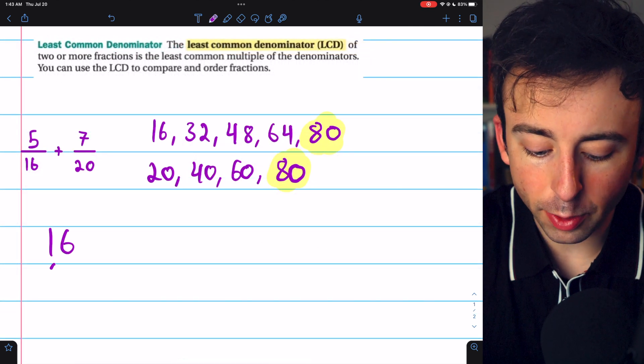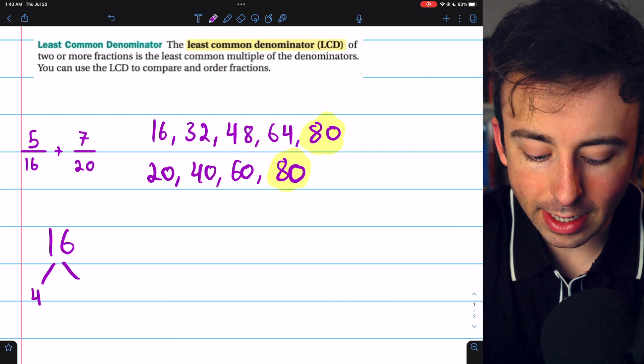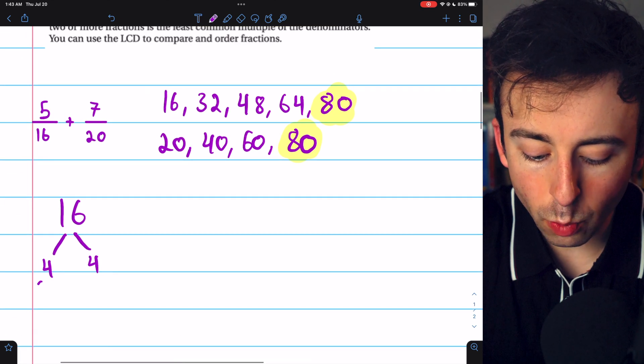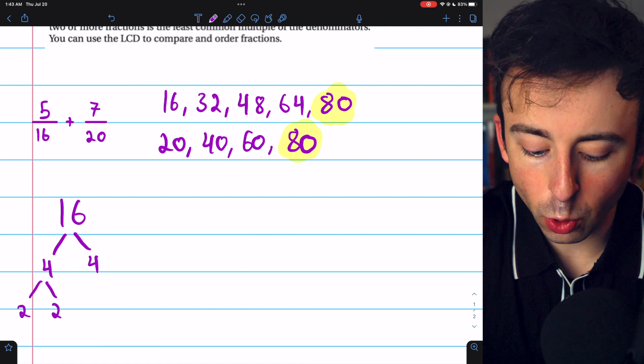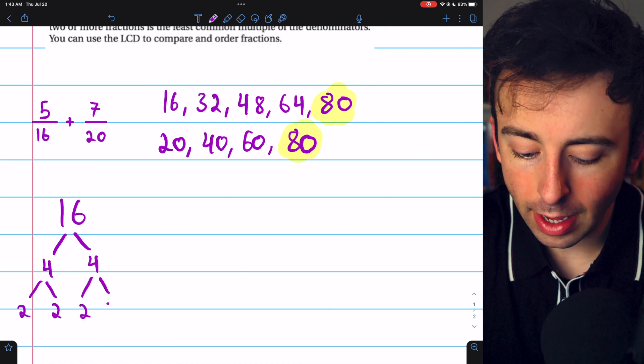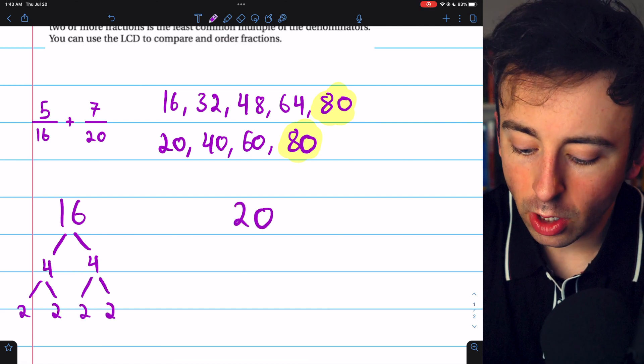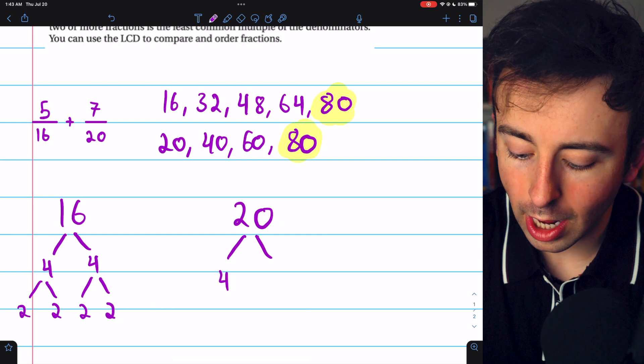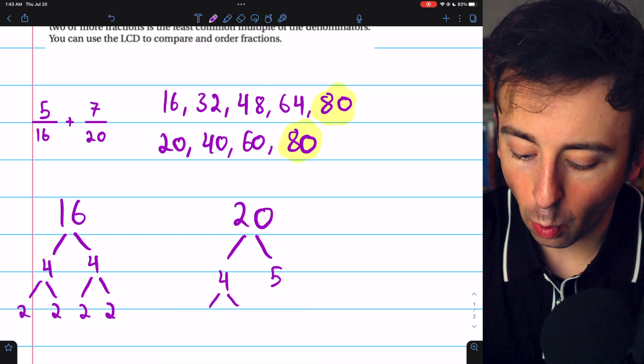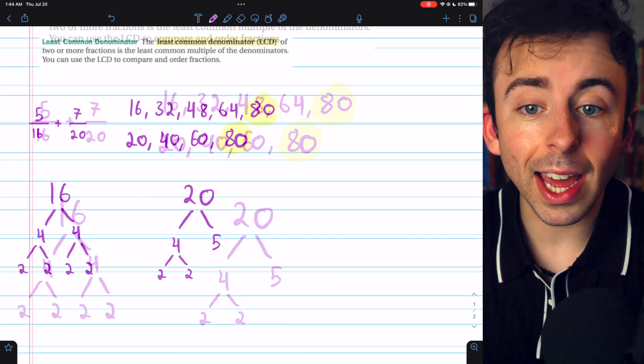If we instead use the factorization strategy, 16 is 4 times 4, and we can factor 4 as 2 times 2. 20, on the other hand, we can factor as 4 times 5, and then again, 4 is factored as 2 times 2.